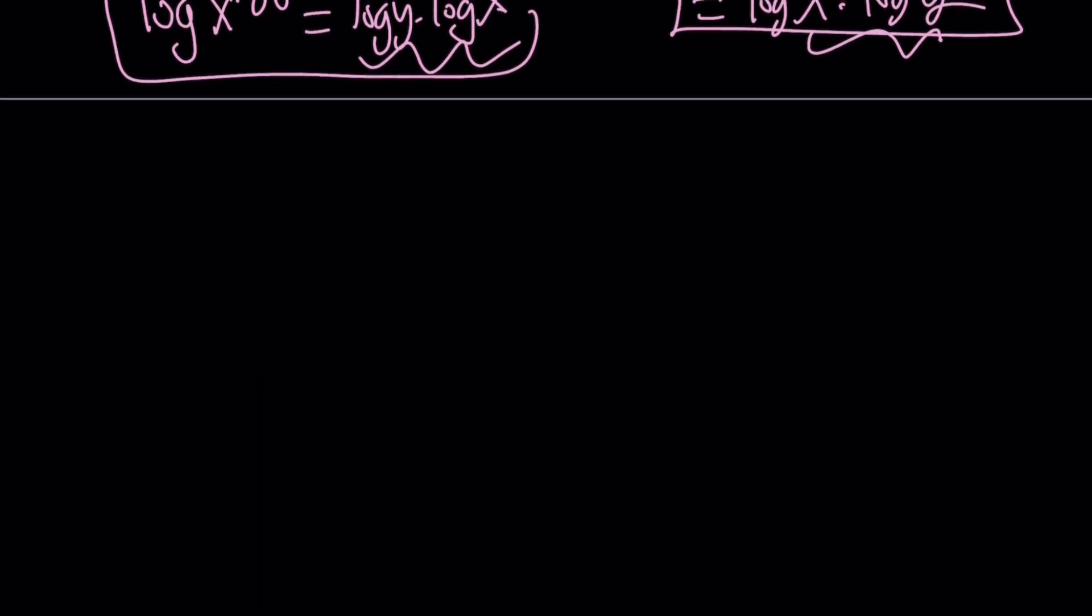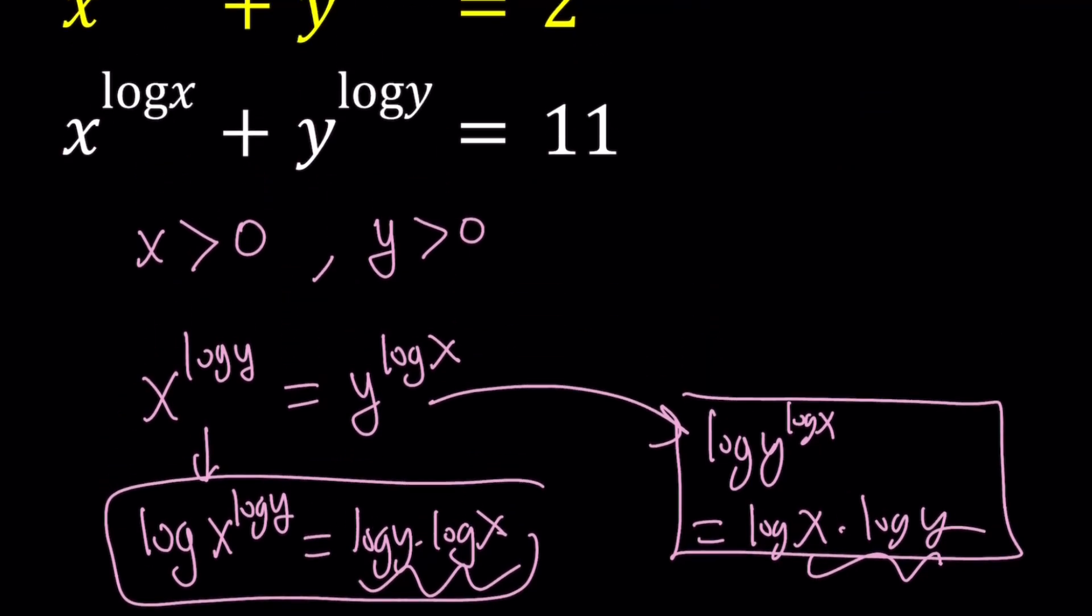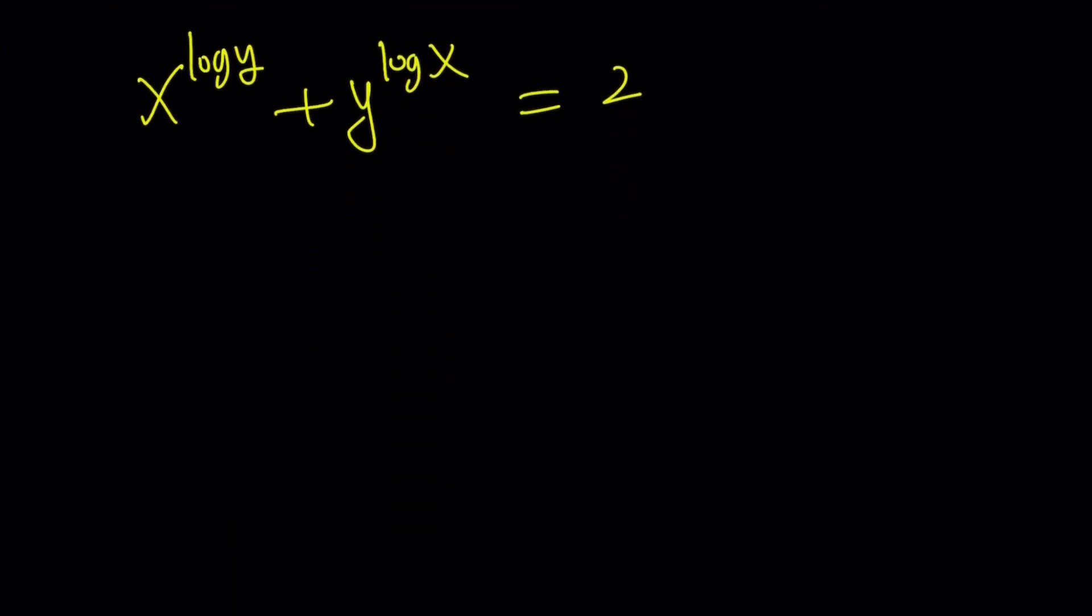So first of all, we established that. And our original equations, one of them at least, tells us that x to the power log y plus y to the power log x equals 2. Otherwise, it's really hard to solve these equations. So if you start off with the second one, you can log both sides, but log of a sum, it's not going to get anywhere. So that's why we started with the first one because it's easier.